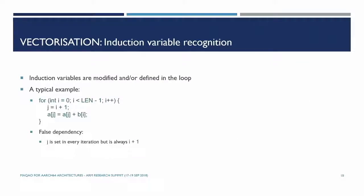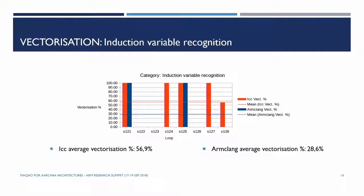Another interesting category is induction variable recognition. We need to make sure there is no issue with induction variables — here we have two induction variables, i and g, which should not prevent the compiler from vectorizing. Here the ARMclang compiler performed less well. But overall, across all categories, ARMclang is at the same level as the ICC compiler except in two categories.